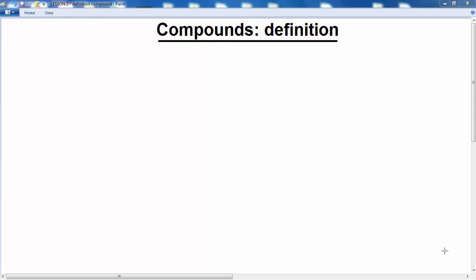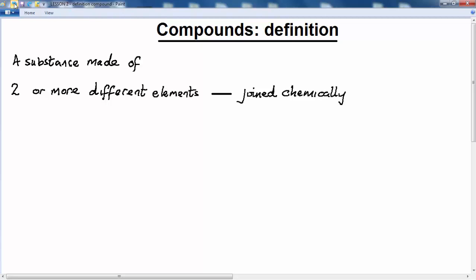In this lesson we're going to look at compounds. First, let's look at the definition for a compound. A compound is a substance made of two or more different elements which are joined together chemically in a fixed ratio.